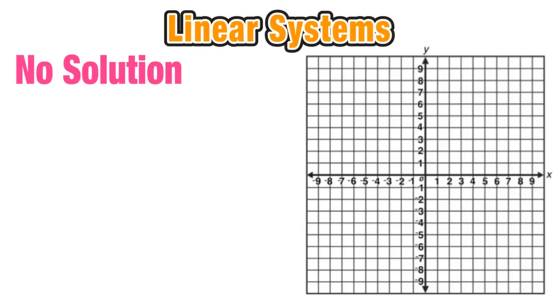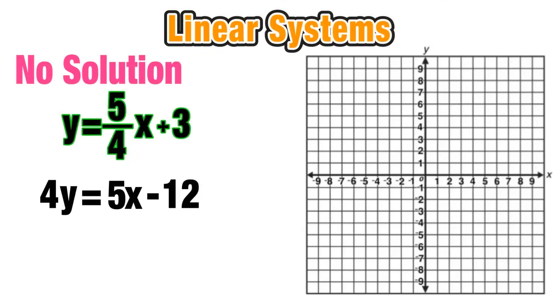So now what's the deal when there's no solution to a linear system? Now the first equation is in mx plus b form. So I'm ready to graph it. I start with the y-intercept, use the slope, and graph the line. So we're good on the first line.